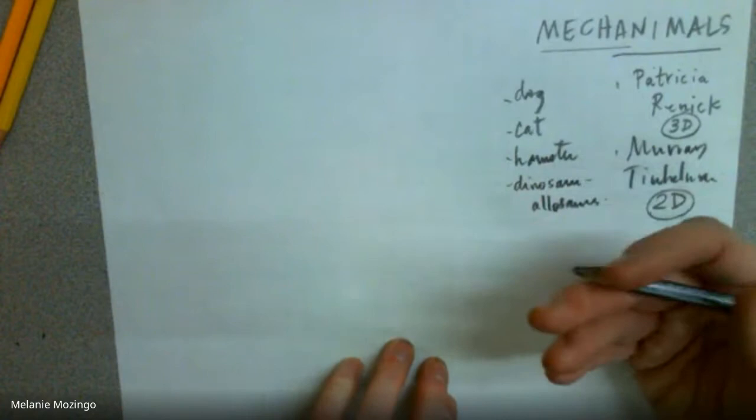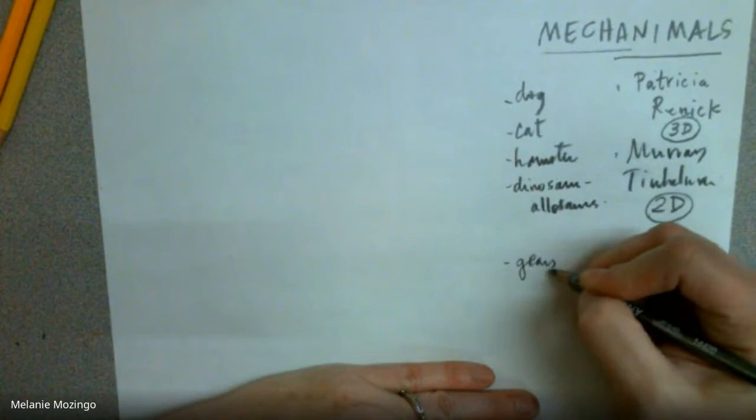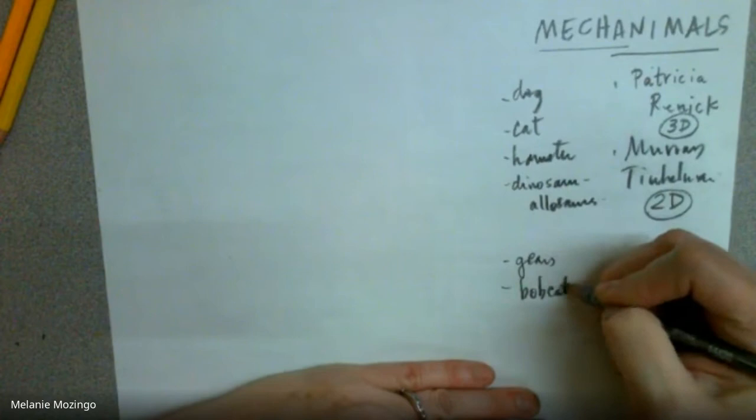Then start to think about what are machine parts. What's something that maybe could run on batteries, has a plug-in, runs with an engine, or gears you could potentially use? Now, me personally, I love things that have gears. I especially love bobcats.